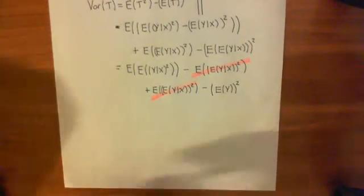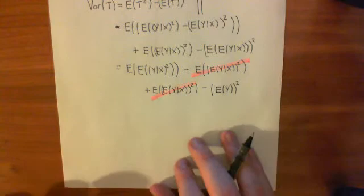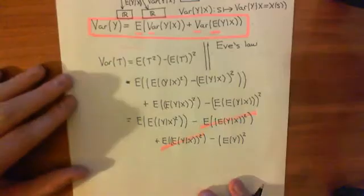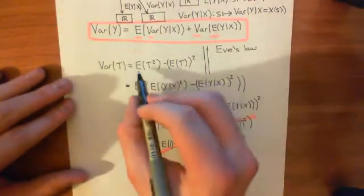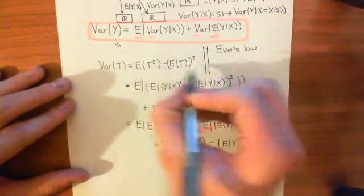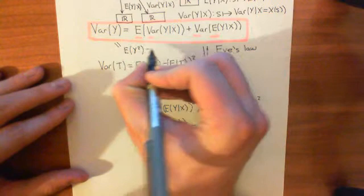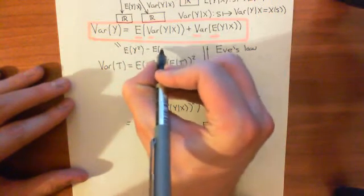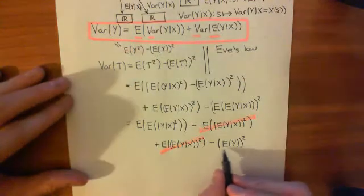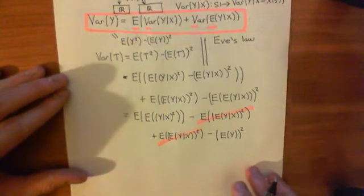After cancelling those two matching terms, all we now need is this remaining term. We're trying to prove that the right-hand side equals the variance of y. The variance of y, by definition, is the expected value of y squared minus the expected value of y, all squared. So the fact that we've got a minus E[y] squared term there looks perfect. All we now need to do is deal with this remaining piece.